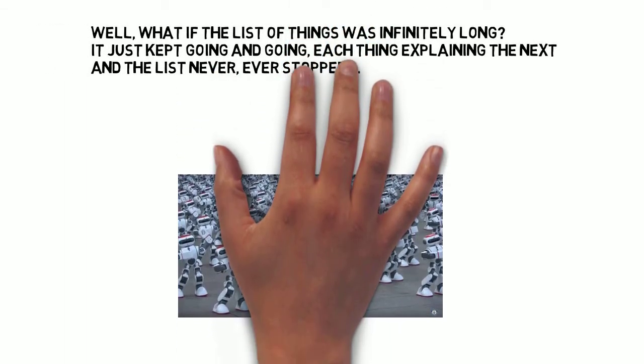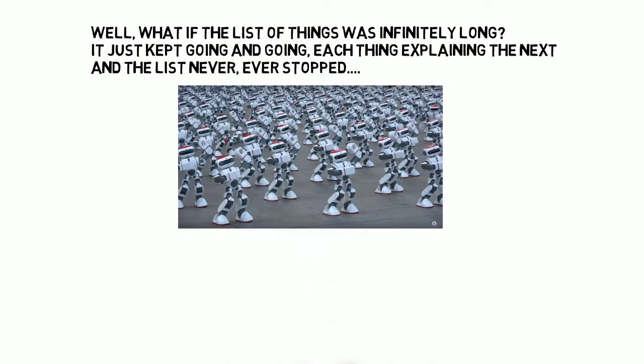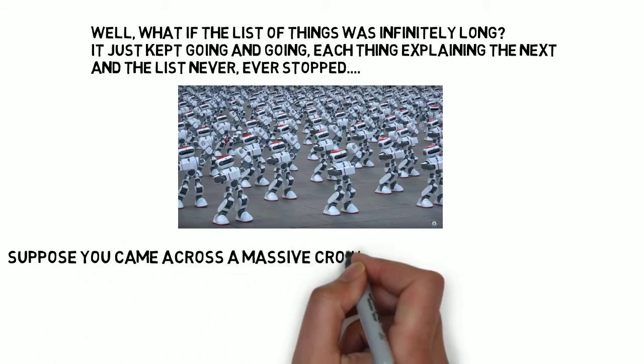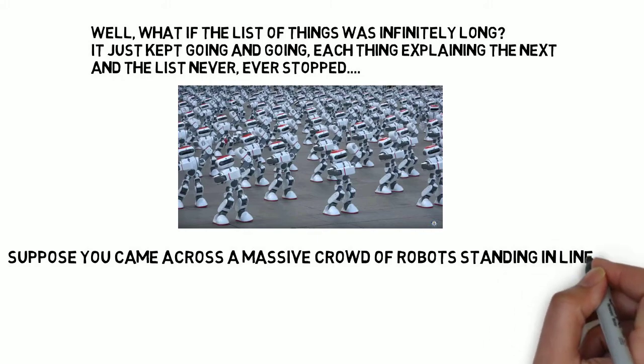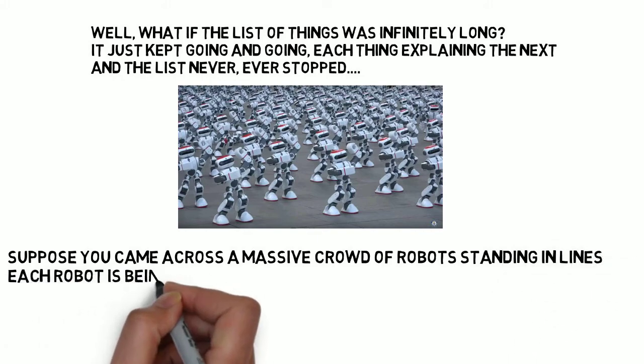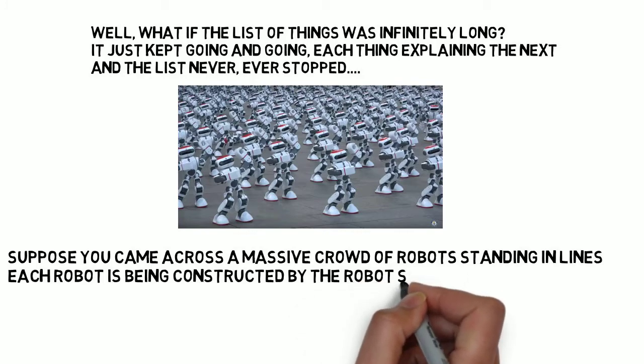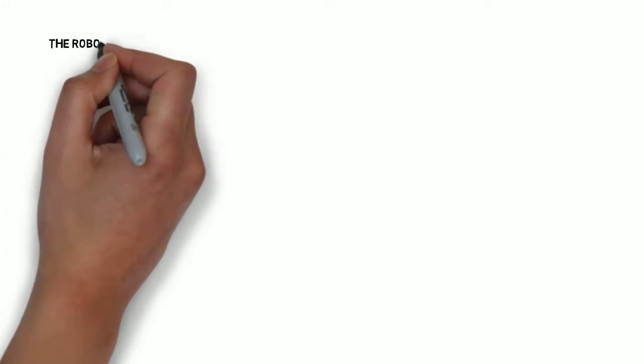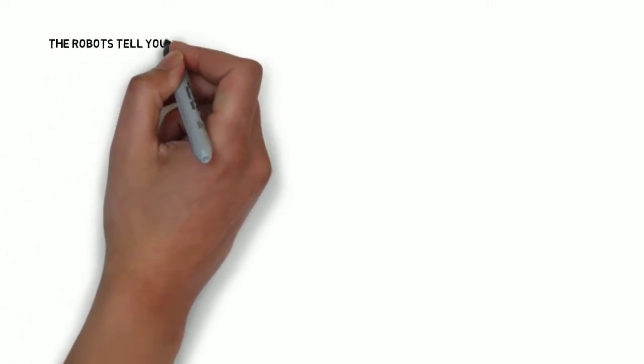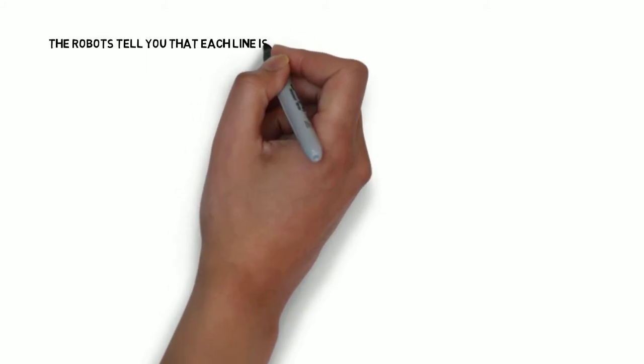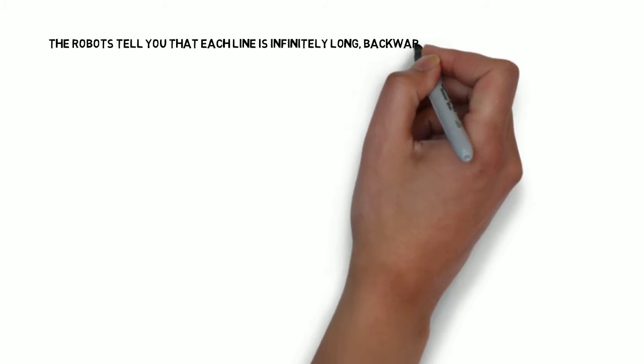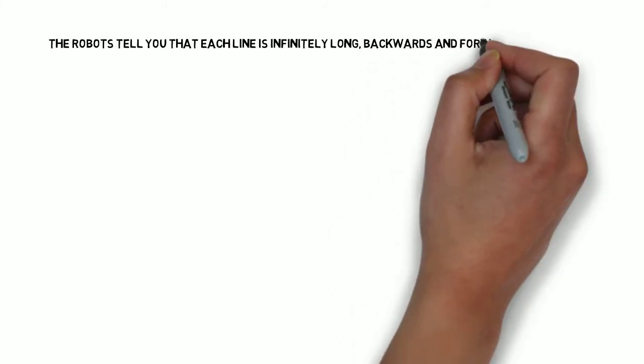Let's imagine you come across a crowd of robots stretching as far as the eye can see in every direction and they're all standing in lines. And each robot is being made by the robot standing immediately behind it. So the robots are actually in the process of being constructed. That leads you to ask a question. Why do these robots exist? So you ask them and the robots respond to you. They say, listen, the reason we're here is that these lines are infinitely long and each one of us is being made by the robot just behind us and that explains where we all come from.